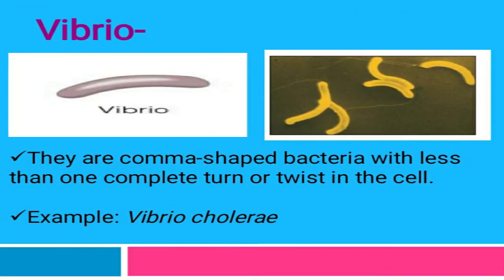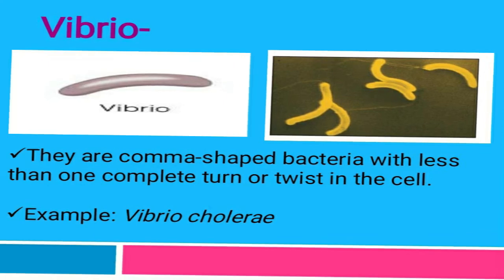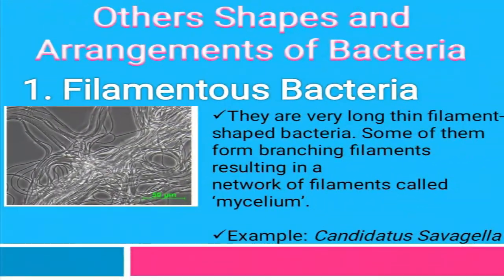The last spirilla arrangement is vibrio, which is a comma-shaped or twisted cell. The example is Vibrio cholerae, as you can see in the image.